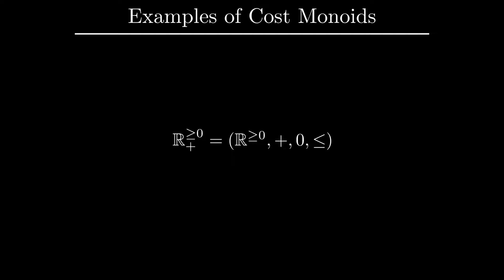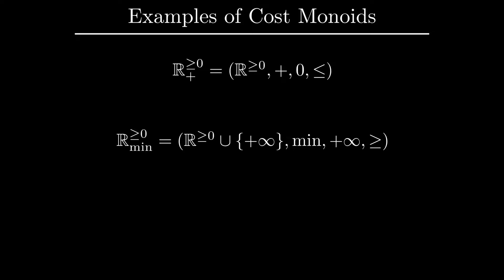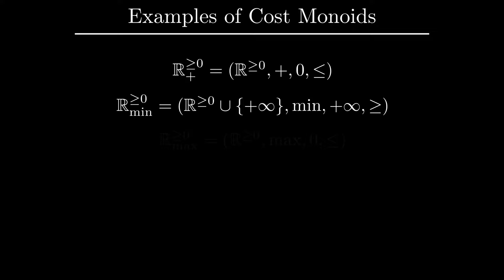We have already encountered two examples of cost monoids. The most familiar one is the non-negative reals with summation. This is the cost monoid that is used most often in motion planning. The other example that we have seen before is R_min, reals with the operation of taking the minimum. Note that in order to have a monoid, we need to add the infinity element, which becomes the unit element under this operation. And note that we reverse the ordering compared to the usual one on reals, so that infinity becomes the smallest element.